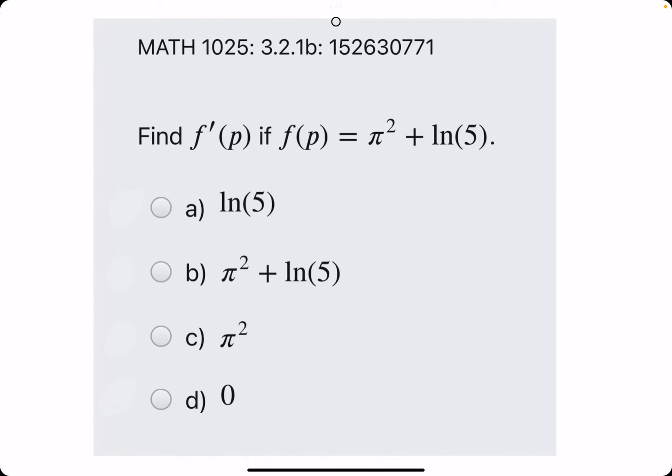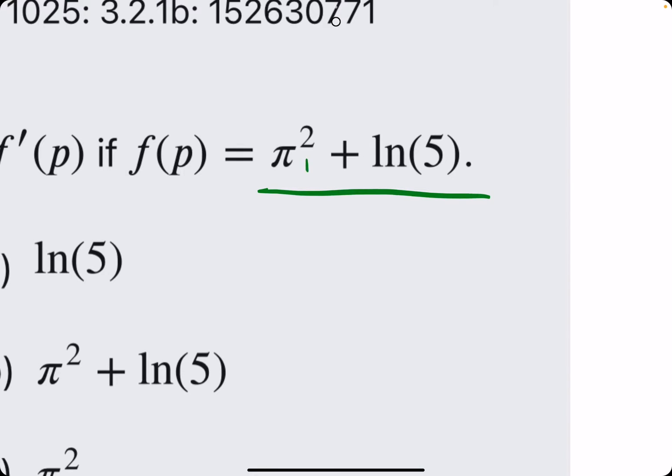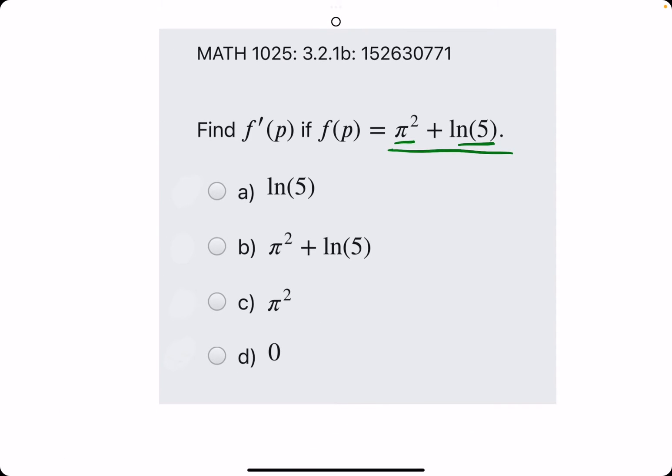All right so they say find f prime of p if f of p is equal to π² plus ln of 5. Again big rule. Do we see p here? Do we see p here? We don't, which means π² and ln of 5 are just constants. The derivatives of any constants are zero. So zero plus zero just zero.